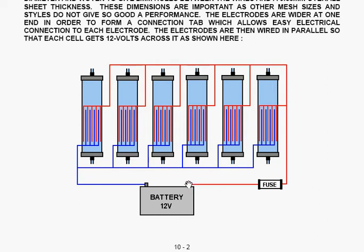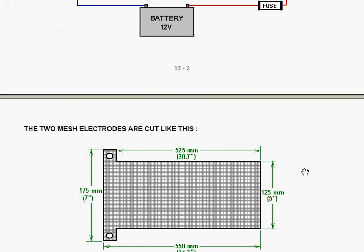The plus of the battery goes through a fuse and out to the plus electrode in each cell. The negative of the battery goes directly to the negative electrode in each cell. There are six cells and the battery feeds all of those six cells.